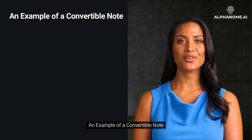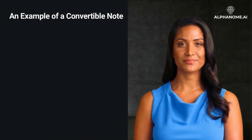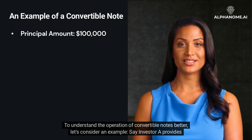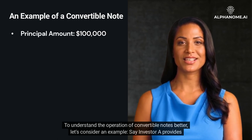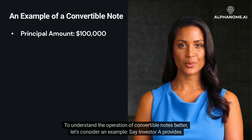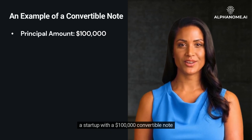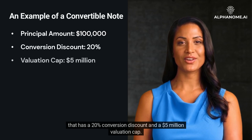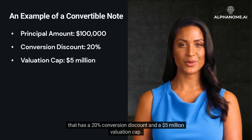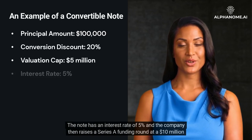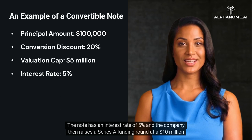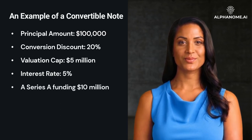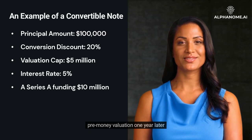An example of a convertible note. To understand the operation of convertible notes better, let's consider an example. Say investor A provides a startup with a $100,000 convertible note that has a 20% conversion discount and a $5 million valuation cap. The note has an interest rate of 5%, and the company then raises a Series A funding round at a $10 million pre-money valuation one year later.